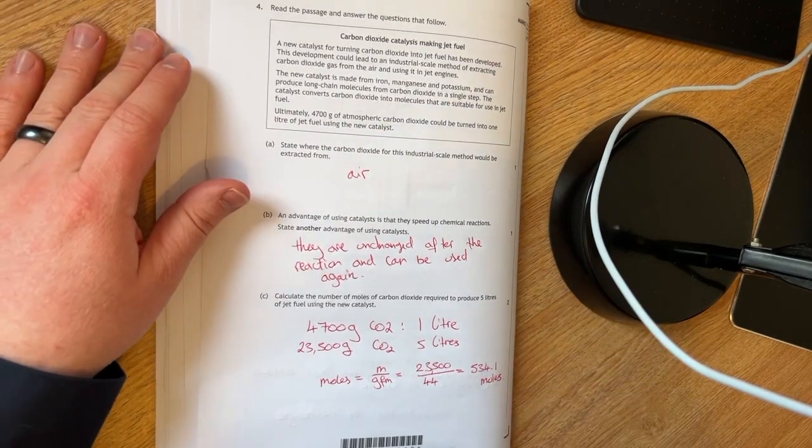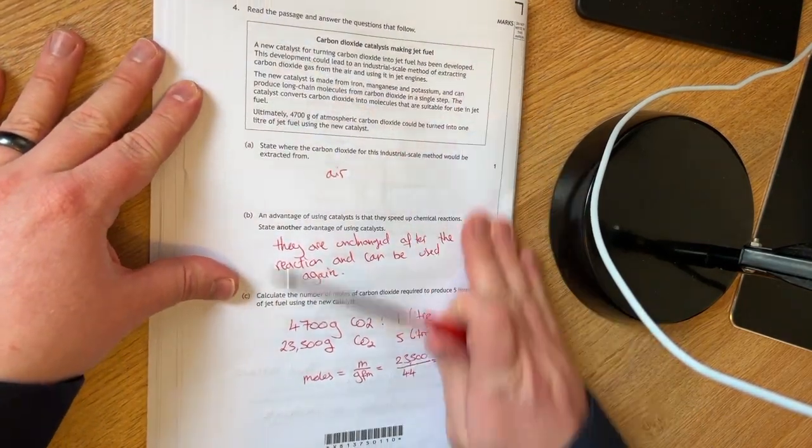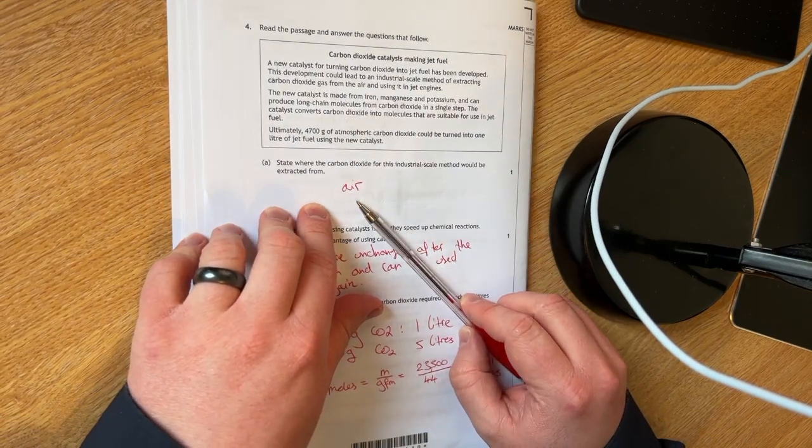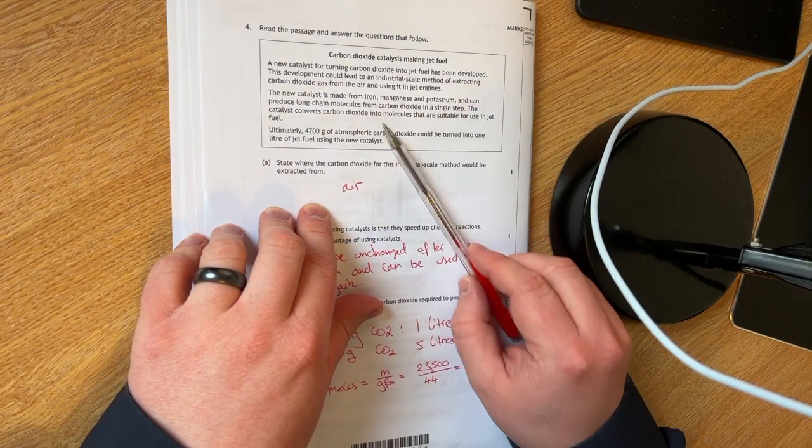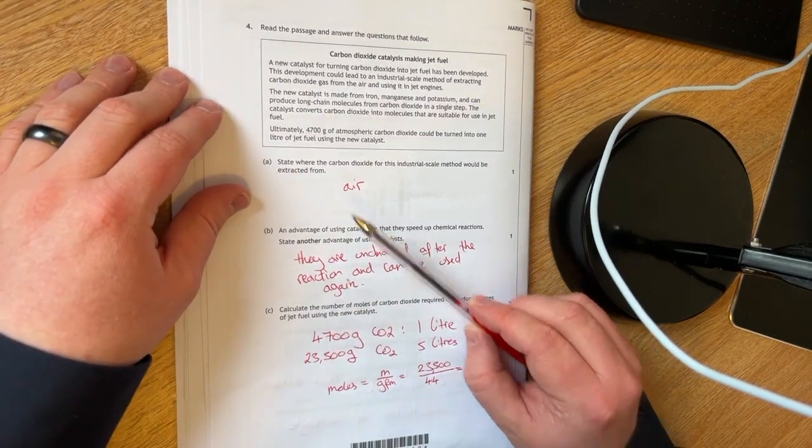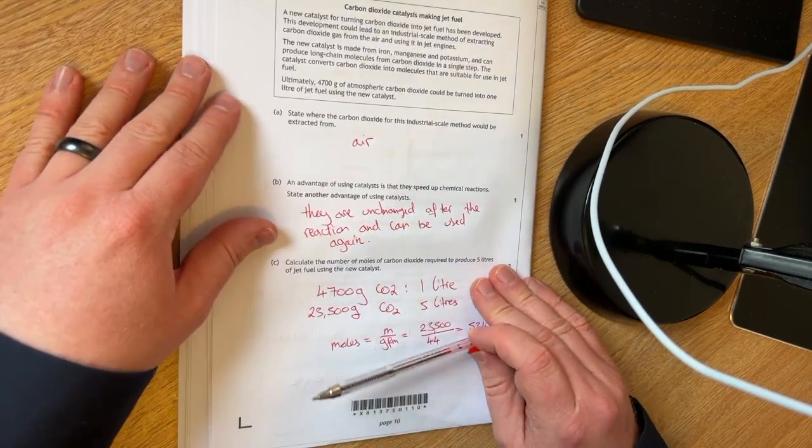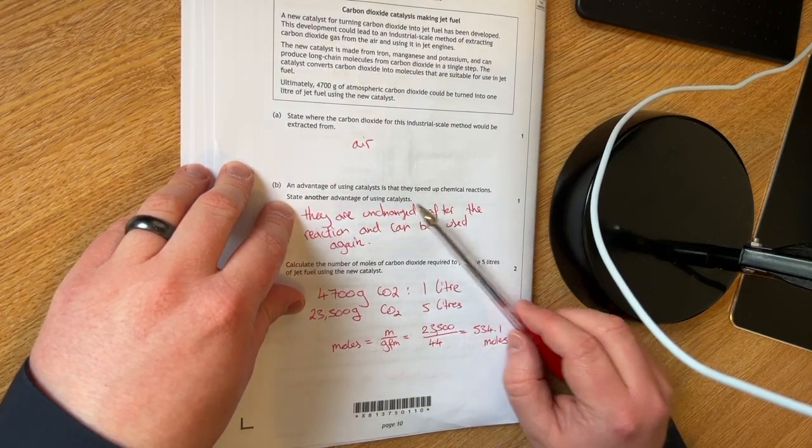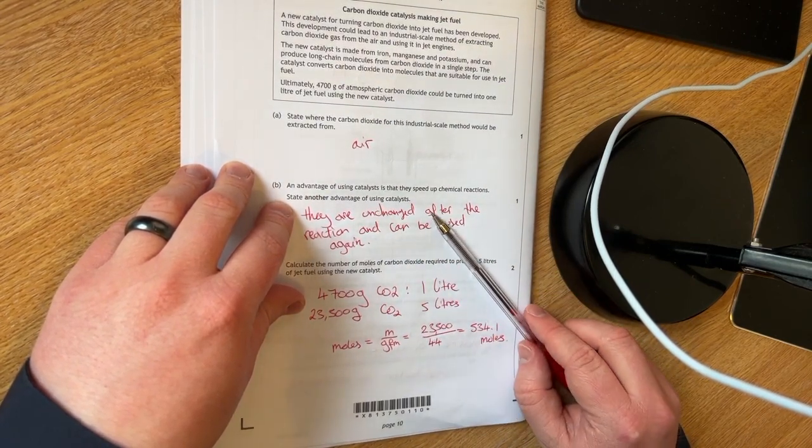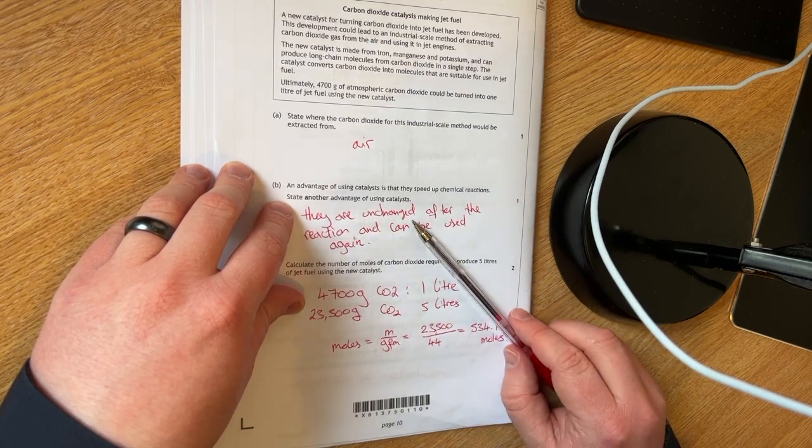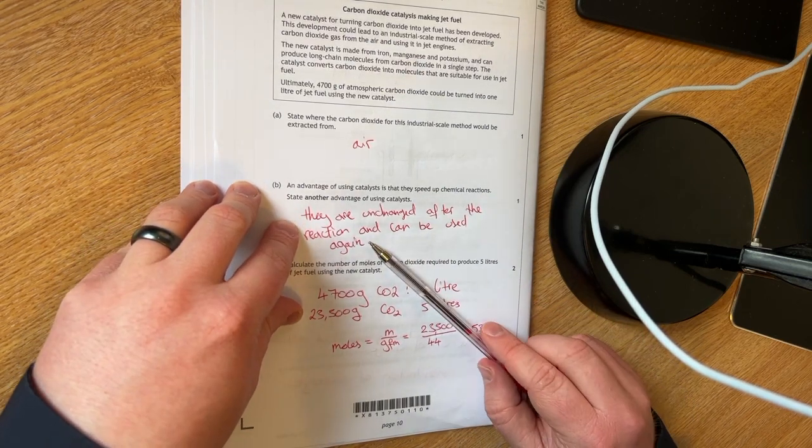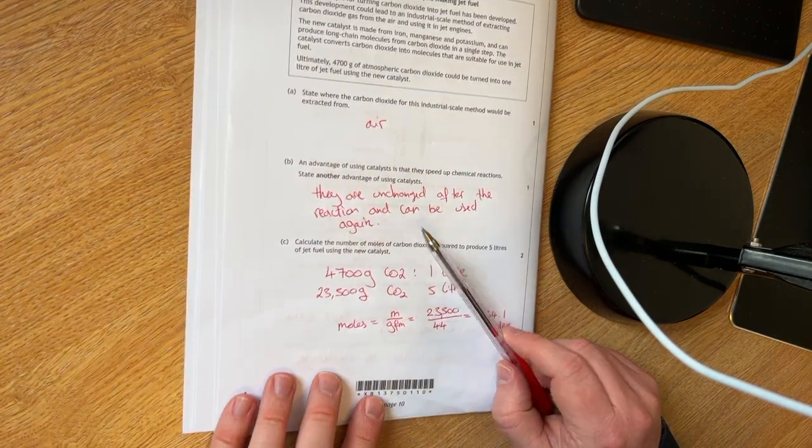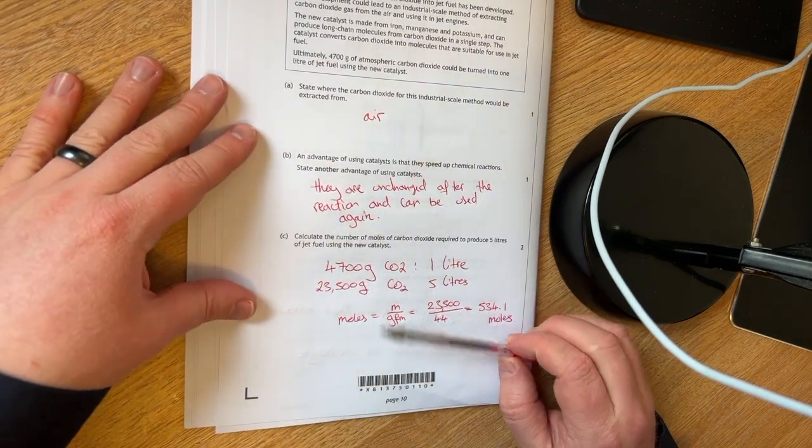This was just reading the passage. So if you read through the passage, the first one is here. So that's just straight from the passage. Part B is asking you about your knowledge of catalysts. An advantage of using catalysts is that they speed up chemical reactions. State another advantage. They are unchanged after every reaction and can be used again.